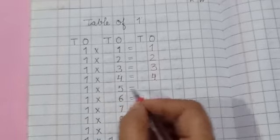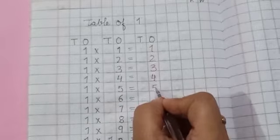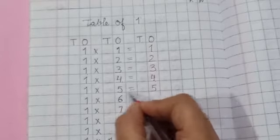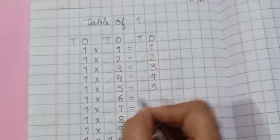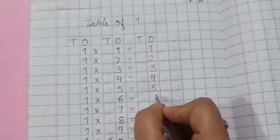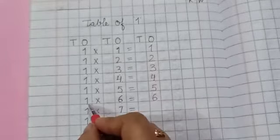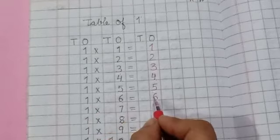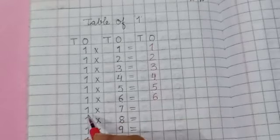One, fives are five. One, fives are five. One, six are six. One, six are six.